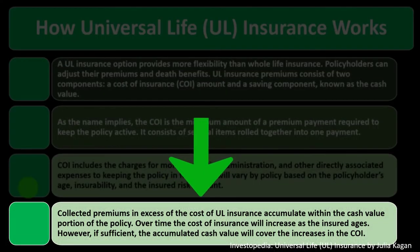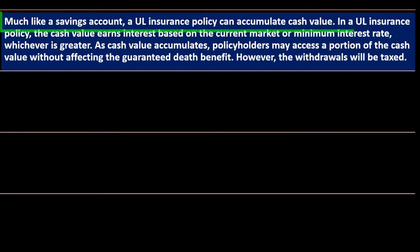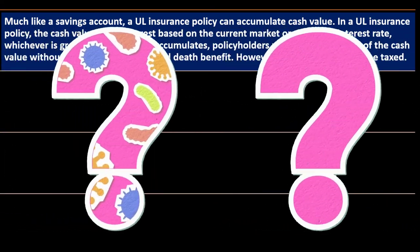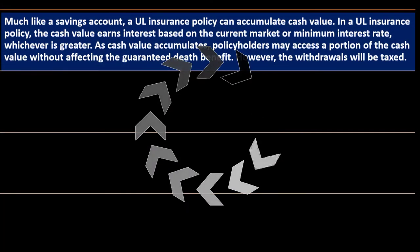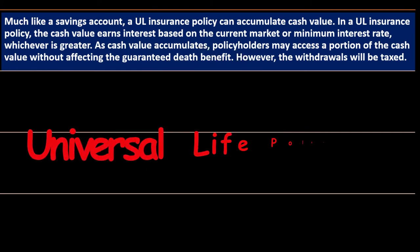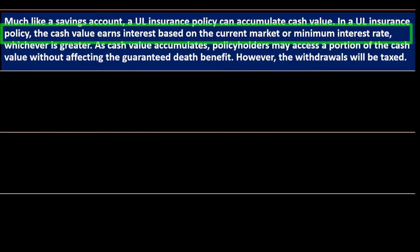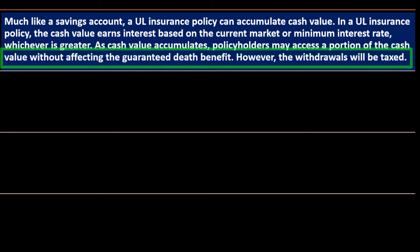However, if sufficient, the accumulated cash value will cover the increases in the COI. Much like a savings account, a UL insurance policy can accumulate cash value. The question would be: why don't I invest in term insurance and then put the money into the stock market, an IRA, a savings account, or a CD versus putting it into the whole life or universal life policy? In a UL insurance policy, the cash value earns interest based on the current market or minimum interest rate, whichever is greater. As cash value accumulates, policyholders may access a portion of the cash value without affecting the guaranteed death benefit.